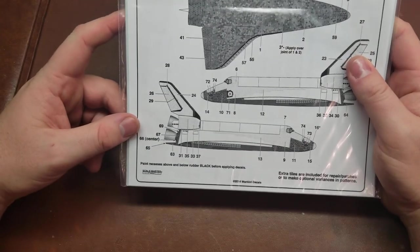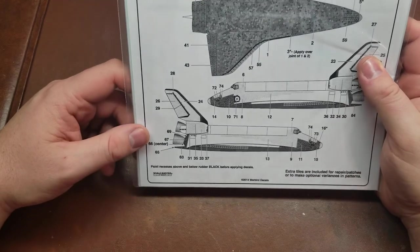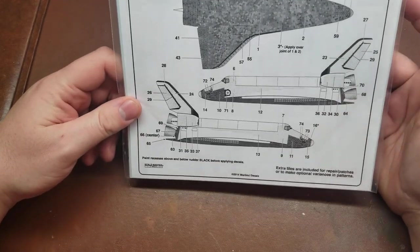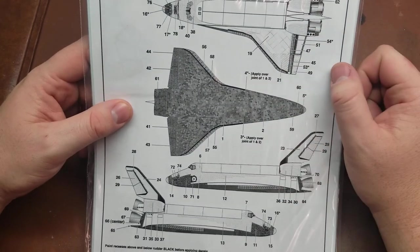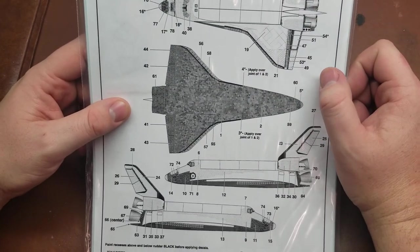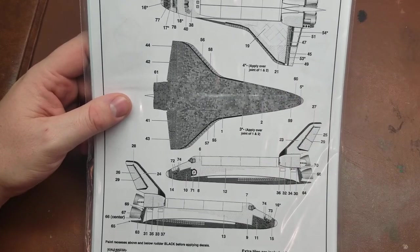These were printed back in 2014 by Scale Master. Obviously because of the age, they're pretty hard to come by. I lucked into this set which I have for my original Monogram release or Revell Monogram release, which does come with the boosters as well.